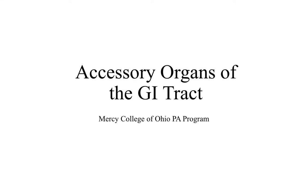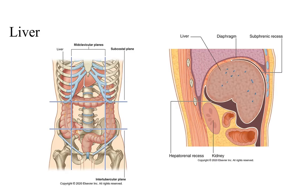Hello students, this is Dr. Ways, and welcome to your lecture on the accessory organs of the GI tract. First we'll start with the liver. Notice that the liver is mostly in the left upper quadrant, or in terms of regions, in the left hypochondriac region and the epigastric region.